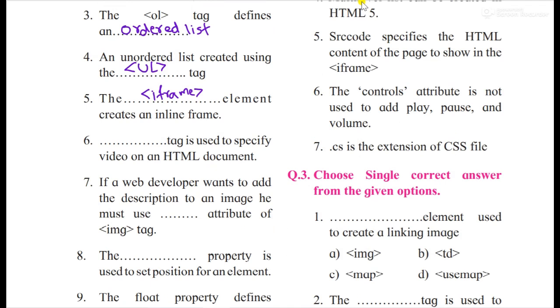Then if a web developer wants to add the description of an image, he must use what dash attribute of HTML tag. As I explained in all my videos of this chapter one, you can check it out on the playlist. For this first chapter, I will provide the videos in the i button or you can say in the description of this video or at the end screen also.